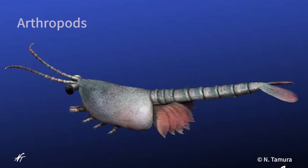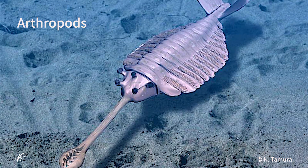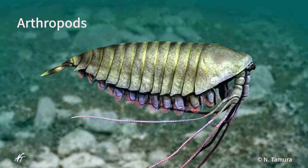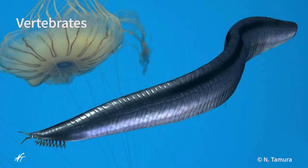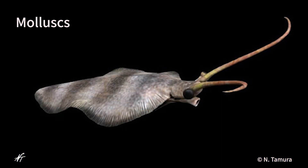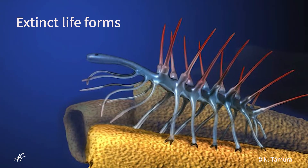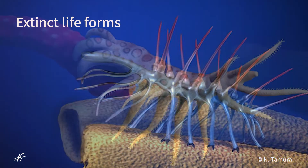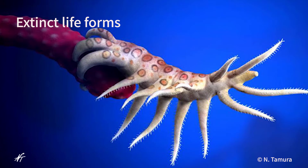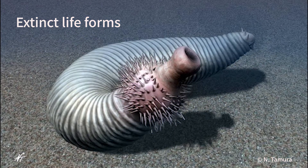Strikingly, all the orders and body types that we know today, like arthropods, early vertebrate ancestors and mollusks, as well as forms that have since become extinct, are already represented in these fossils. It is clear that these organisms developed over a very long period.